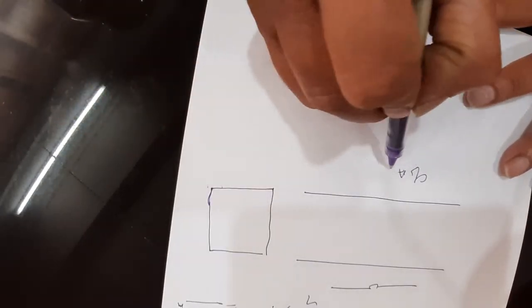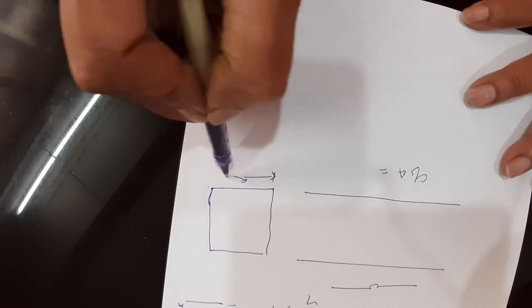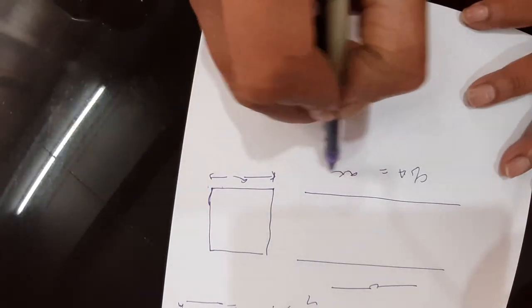If it is a square, then cross sectional area is equal to a × a, where a is the side.